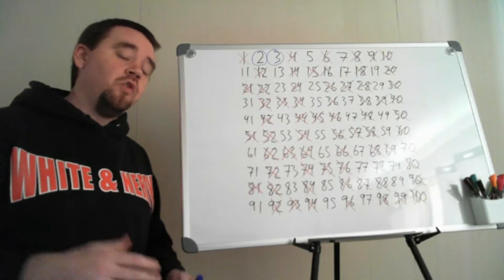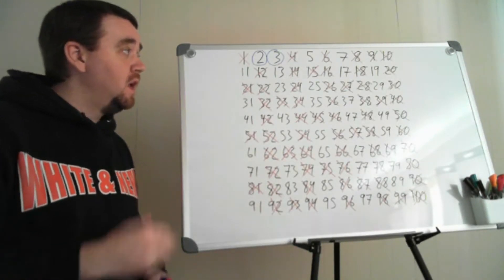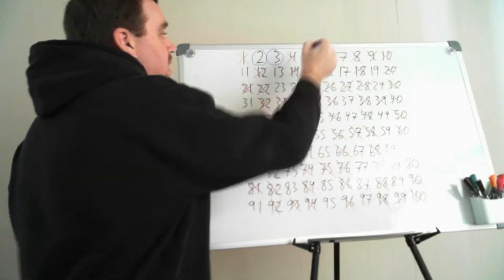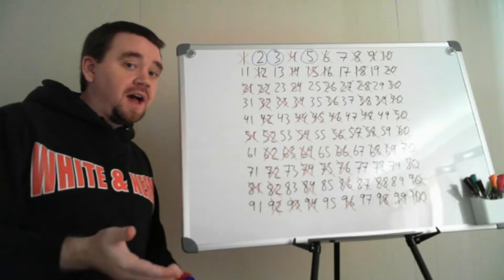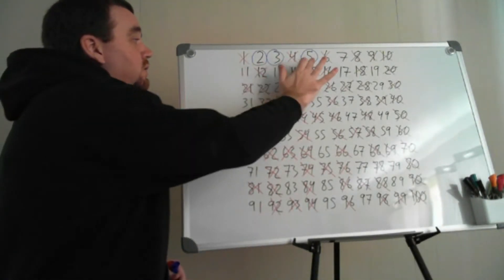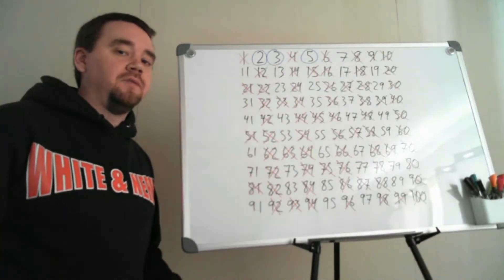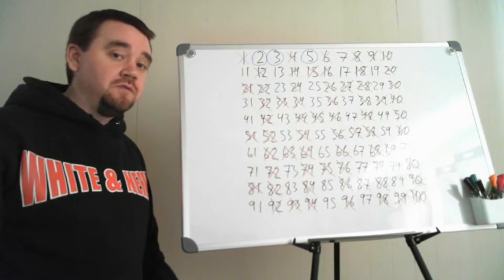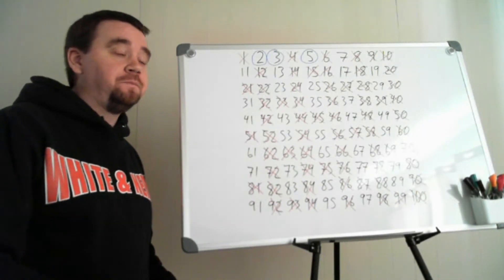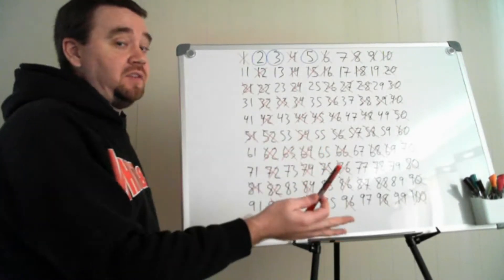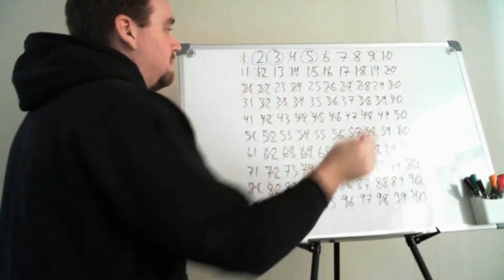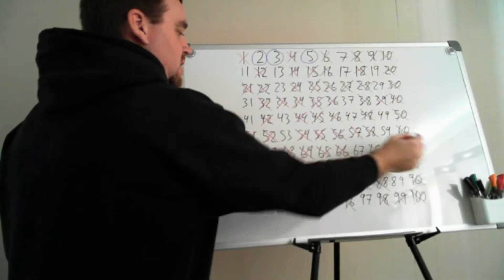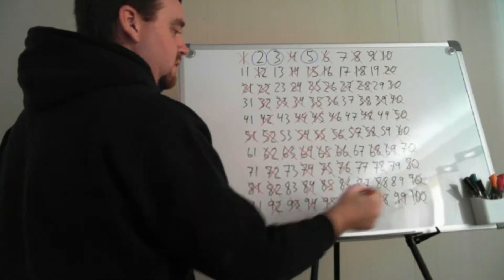Now we've crossed off all multiples of the primes found so far: 2 and 3. The next available number must be prime — 4 is already crossed off, so the next one is 5. We can verify: 2 and 3 can't make a 5, and the only way to multiply to 5 is 1×5. So 5 is prime. I go through and mark off all multiples of 5 after 5 itself: 25, 35, 55, 65, 85, 95, and 100 are the new ones not yet crossed off. We're really narrowing down our list.